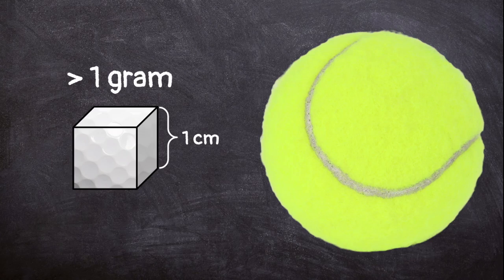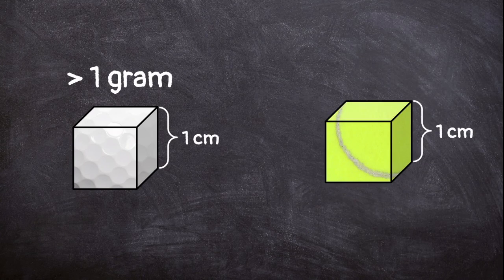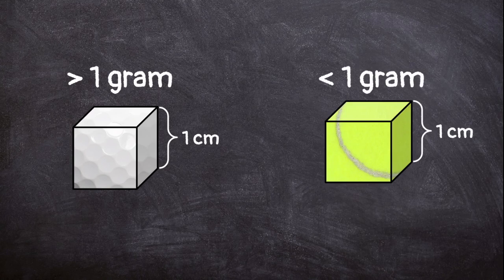If you could cut a cubic centimeter size piece out of a tennis ball, it would have a mass less than 1 gram and will float.